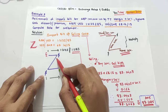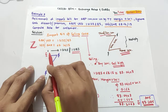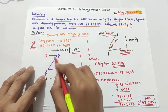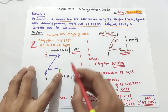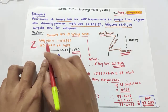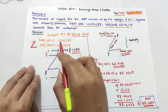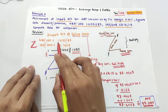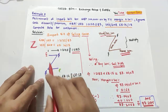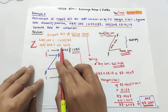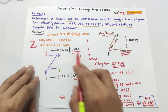In the Z diagram, dollar is on the common line, Indian rupees at the bottom, and pound at the top. We have: one pound equals 1.2175 and 1.2185, and one US dollar equals 68.14 and 68.15. These values are placed on the right side of the Z.